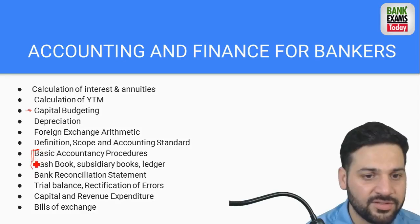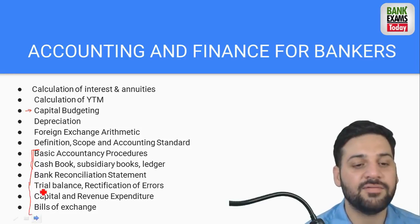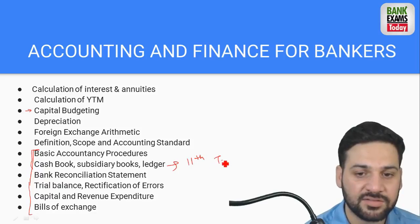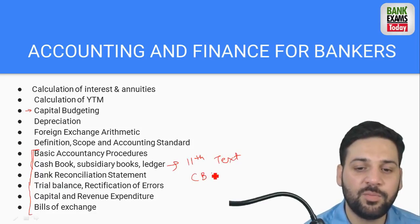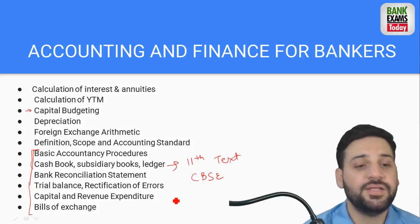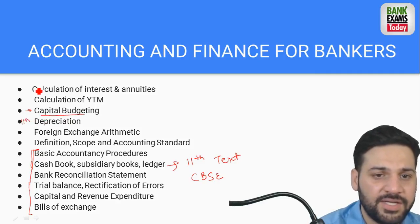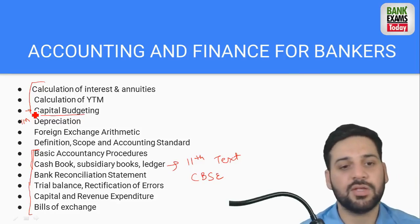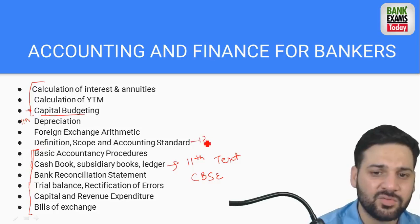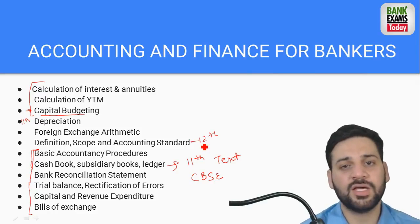Topics include basic accounting procedures, cash book, bank reconciliation statement (BRS), trial balance, capital and revenue expenditure - all of this is 11th standard textbook content. If you have read the CBSE 11th class book, you can use that too - though our notes are available. Ratio analysis is very easy. Final accounts of banking companies and company accounts - don't go too in-depth, look at the previous year's paper - it is very easy.